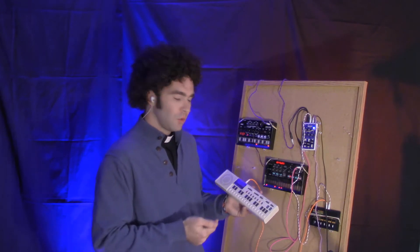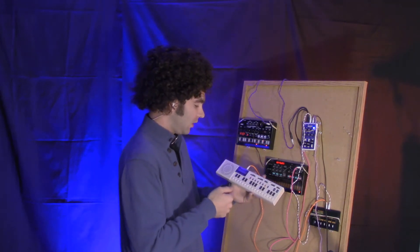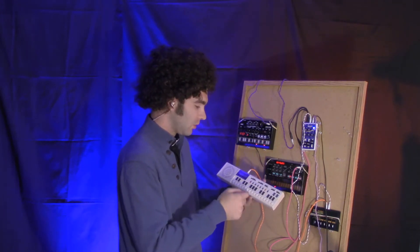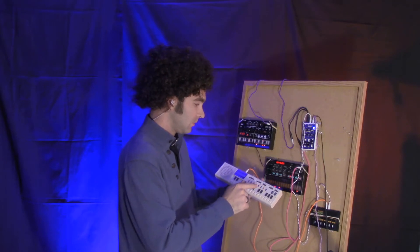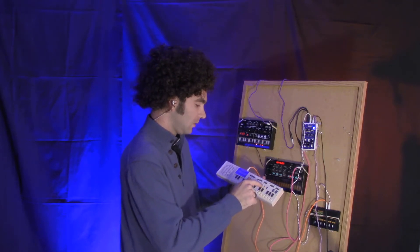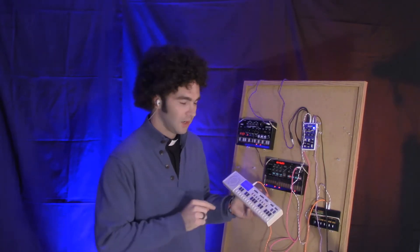We can take our Casio VL-1 and flip it over to record and input a simple sequence. Got to clear out the other. Of course, we want to come in at the right time.